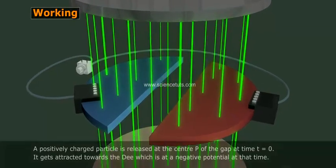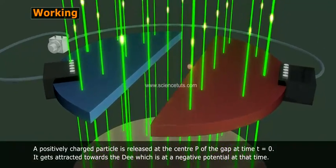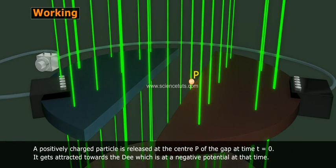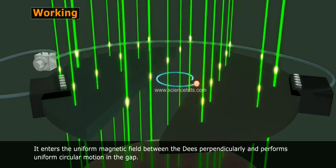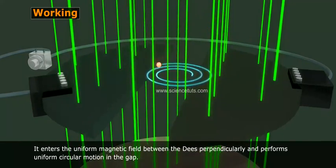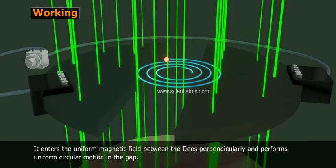Working: A positively charged particle is released at the center P of the gap at time T equals zero. It gets attracted towards the D which is at a negative potential at that time. It enters the uniform magnetic field between the D's perpendicularly and performs uniform circular motion in the gap.